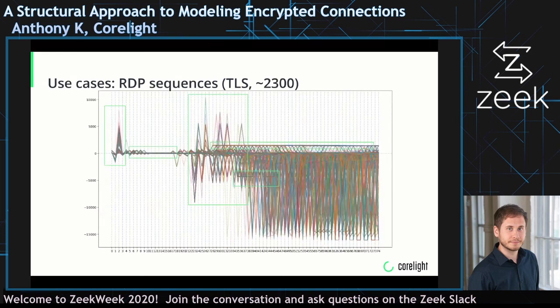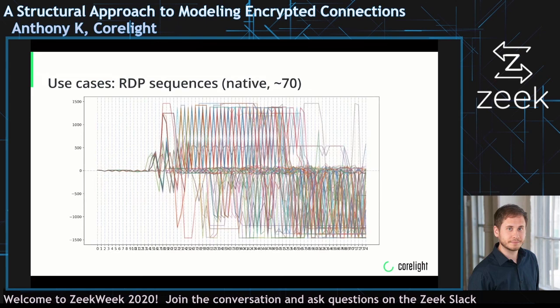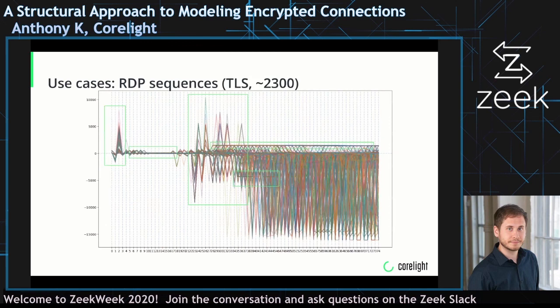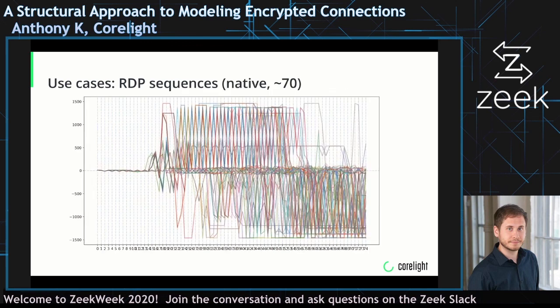This is about 2,300 RDP connections wrapped in TLS. I've boxed out some interesting patterns that visually emerge — there's a clear client ceiling at some point in the connection, a client packet around index two or three that varies quite a bit, and some server ceilings. The point is that if I can visually spot these patterns, I can probably write a script function to identify them. Separately, this is approximately 70 RDP connections over native encryption. RDP is the same protocol regardless of how it's encrypted, but if you look at these two graphs, the protocols look very different — they have different patterns in their connection sequences.